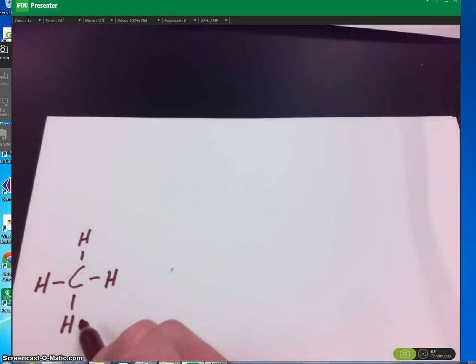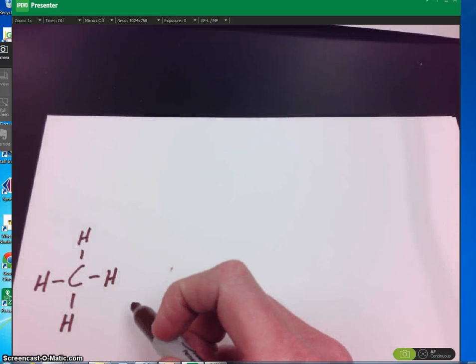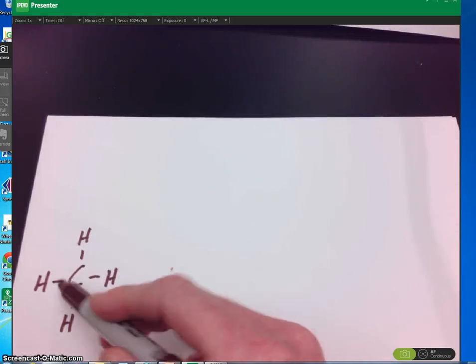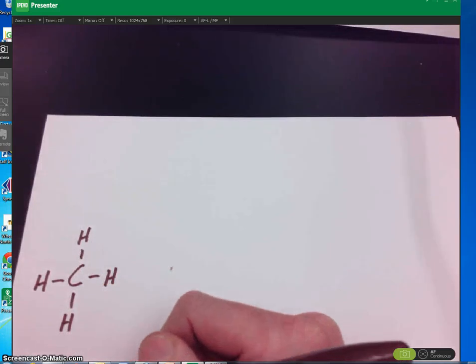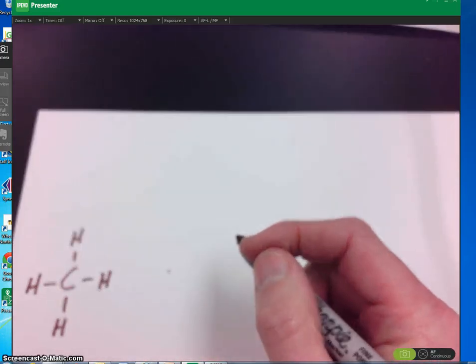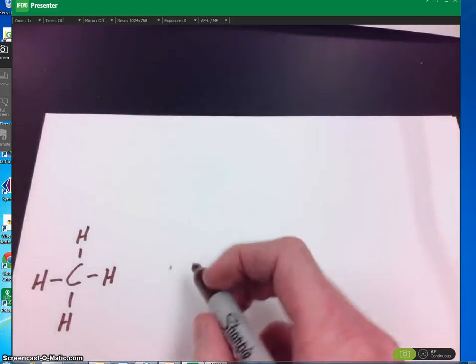So this Lewis dot structure, the way it's been drawn, it looks like these are 90 degree angles. But you know that these four electron pairs want to be as far apart as possible. And the way that they can do that is they can occupy all three planes, the x, y, and z plane.